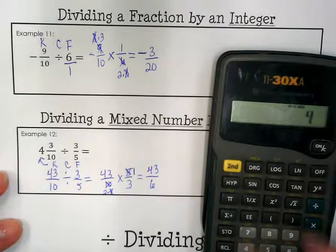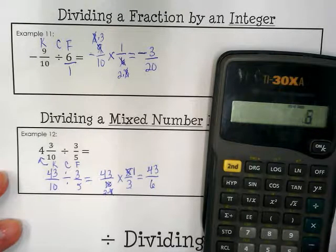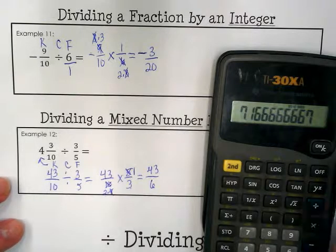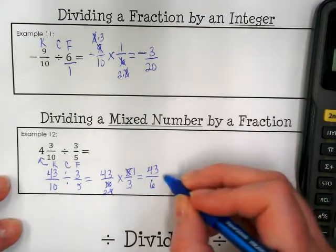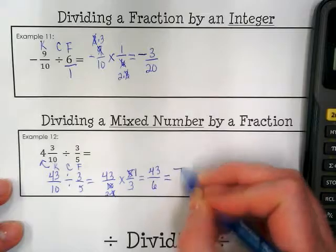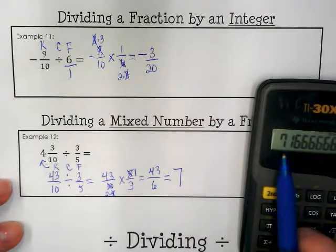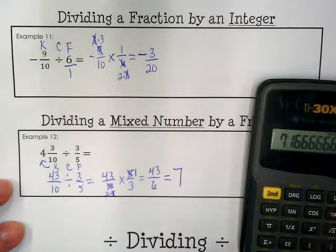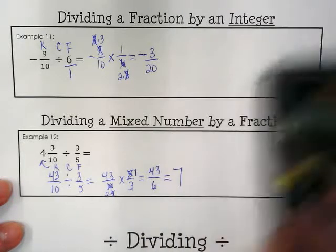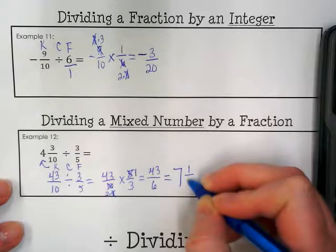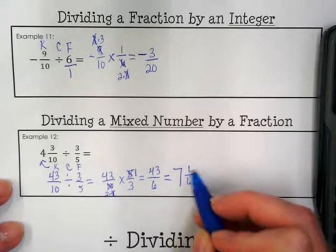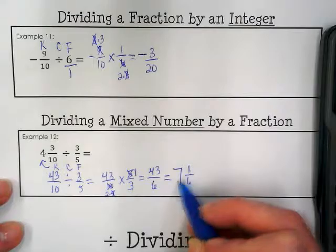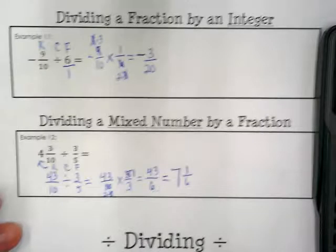Can 43 be evenly divided by 6? It can't. I get 7.1. So if I want to change this to a mixed number, I'm going to end up with the whole number 7, because that's a number that's in front of the decimal. And then 6 times 7 is 42. So that means I'm left with 1 over 6, because 42 plus this 1 would be 43.